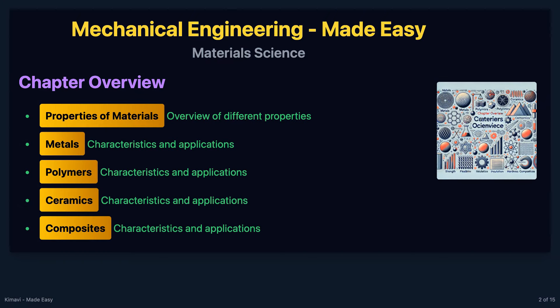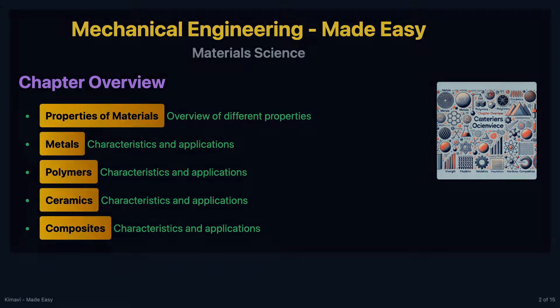In this chapter, we will explore the properties of materials, including metals, polymers, ceramics, and composites. We will also discuss examples and applications of each type of material.